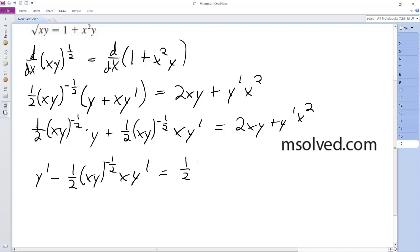1/2(xy)^(-1/2) y minus 2xy. So I'm going to have y', and I get y' is equal to 1/2(xy)^(-1/2) y minus 2xy all divided by...